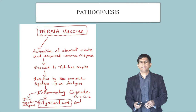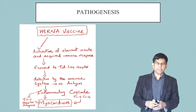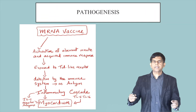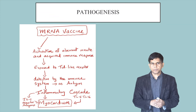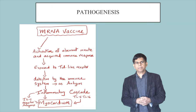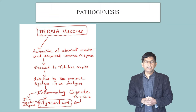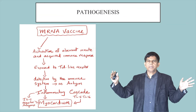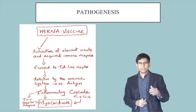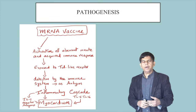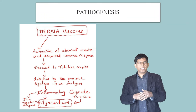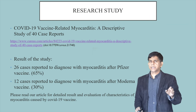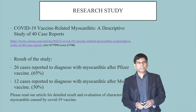What is the pathogenesis of vaccine-induced myocarditis? This mRNA vaccine causes activation of an aberrant innate and acquired immune response, along with exposure to T-cell receptors. The body detects this as an antigen, and then an inflammatory cascade comes into play — IL-1 receptor antagonist, IL-5, IL-6, and a cytokine storm — which starts attacking the myocardium, resulting in myocarditis.